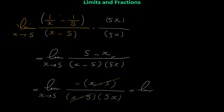After canceling, we have only negative 1 over 5x as x approaches 5. By direct substitution the limit is negative 1 over 5 times 5, which is 25. So this limit equals negative 1 over 25.